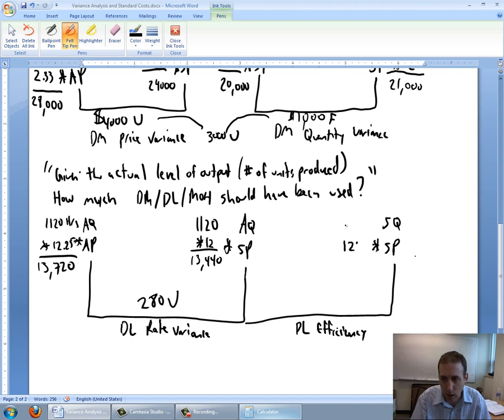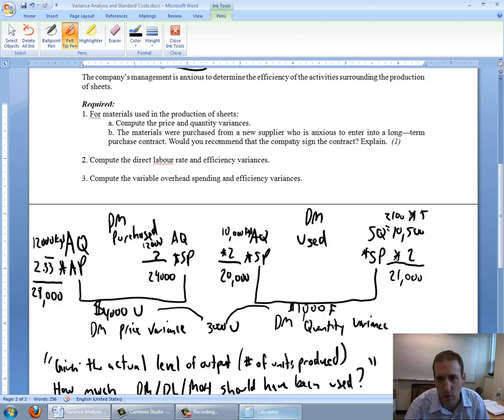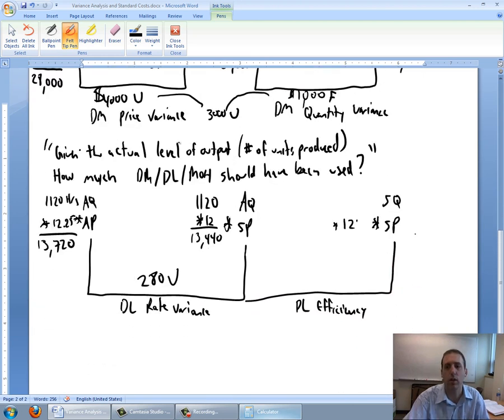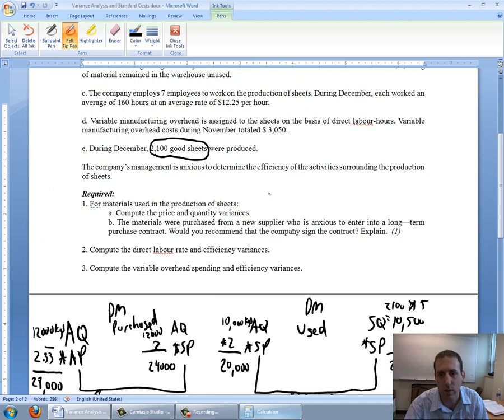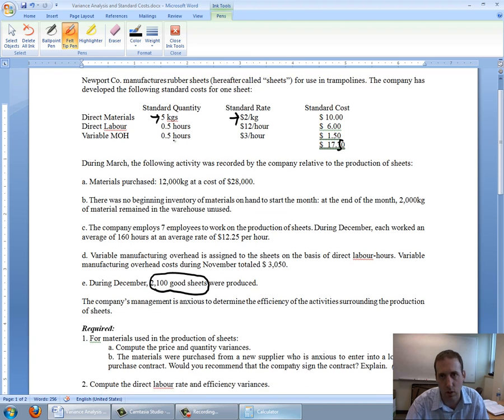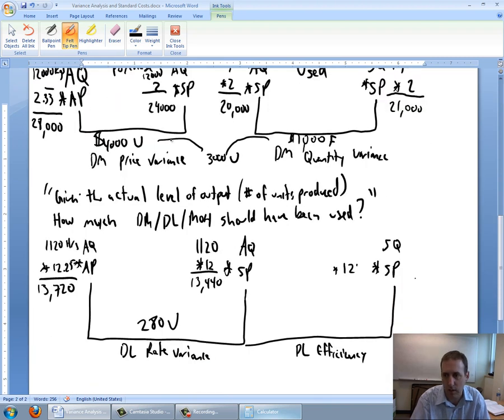Standard price remains $12. I've got to deal with standard quantity now. My standard quantity, I answer the same question. Given the actual level of output, the fact that we actually made 2,100 good sheets, given the fact that I actually made 2,100 good sheets, how much labor should I have used? Well, I made 2,100 sheets and the labor is supposed to take half an hour, 0.5 hours. So 2,100 times 0.5 is how much time I should have taken. 2,100 times 0.5, and that is 1,050. So I should have taken 1,050 hours.